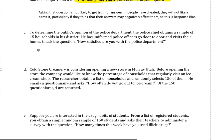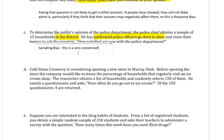Alright, C. To determine the public's opinion of the police department, the police chief obtains a sample of 15 households in his district. That's an important point, that they selected them from his district. And he has uniformed police officers go door to door and visit their homes to ask the question, How satisfied are you with the police department? Okay, there's a couple problems here. I'd say first and foremost sampling bias, because this is a very convenient sample. That's one issue with sampling bias.